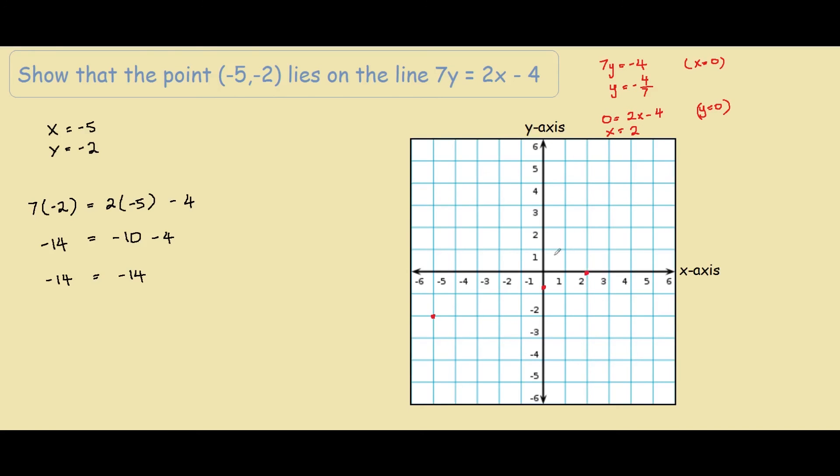So if we graph this line, we would get this. And as you can see, the point negative 5, negative 2 also lies on the line.